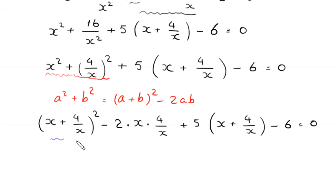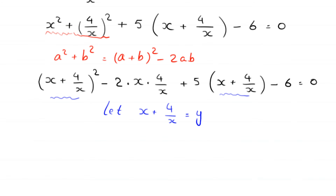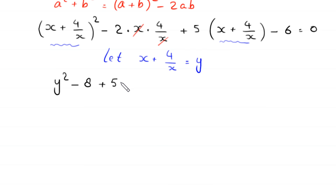We now have x plus 4 over x whole squared minus 2 times 4, which is 8, plus 5 times x plus 4 over x, minus 6 equals 0. We substitute y equals x plus 4 over x, so this becomes y squared minus 8 plus 5y minus 6 equals 0.